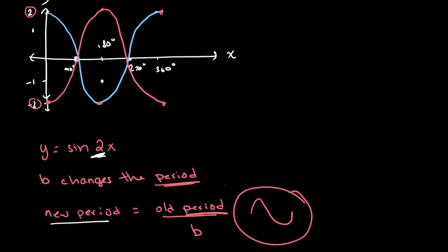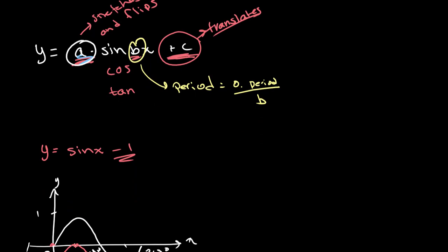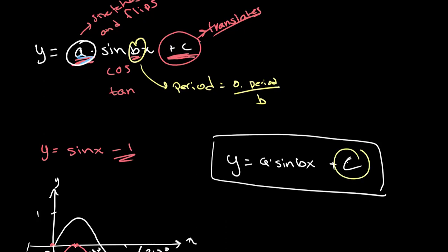Now just to bring everything back together and to emphasize what we've learned, when we write y is equal to a times sine of bx plus c, what c does is it translates our graph so it moves it up and down, what a does is it amplifies or flips our graph if it's negative, and what b does is it changes the period.